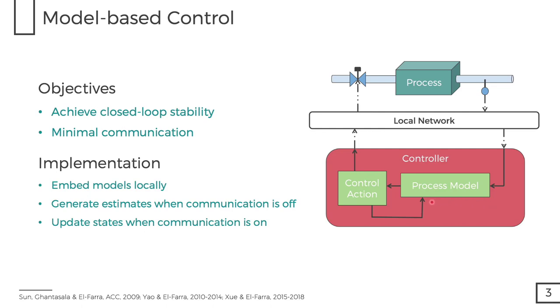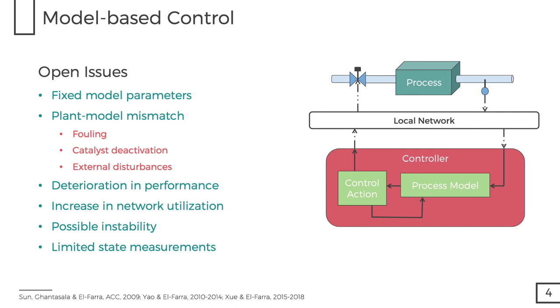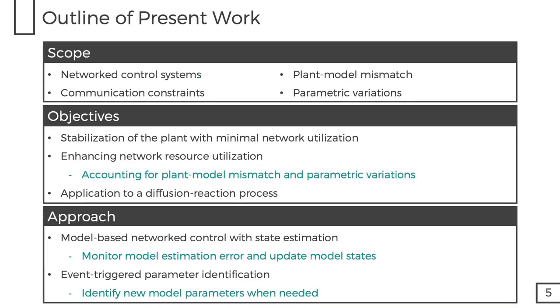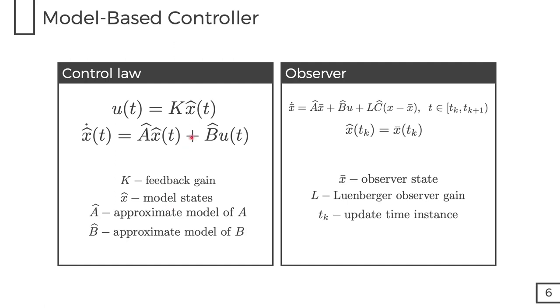Model-based control aims to achieve closed-loop stability with minimal communication, and it does so by embedding models of the process in the controller, and the models are used to generate estimates of the states when communication is suspended, and when communication is re-established, the states are updated through the local network. With this approach, however, the extent of network resource utilization savings is hindered by a number of open issues, such as fixed model parameters, which can deteriorate performance or increase network utilization. In addition to that, this approach does not address limited state measurements. Motivated by these considerations, we present in this work an approach for augmenting time-triggered model-based output feedback control with event-triggered online parameter re-identification for process systems subject to limited output measurements, process parameter variations, and sensor-controller communication constraints.